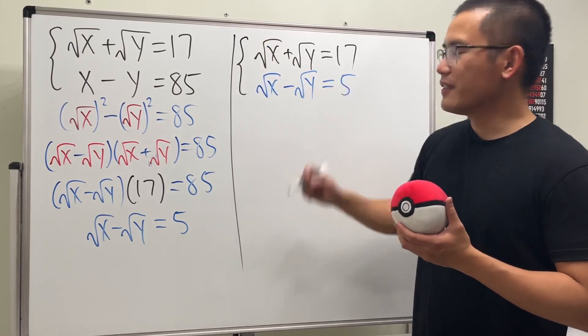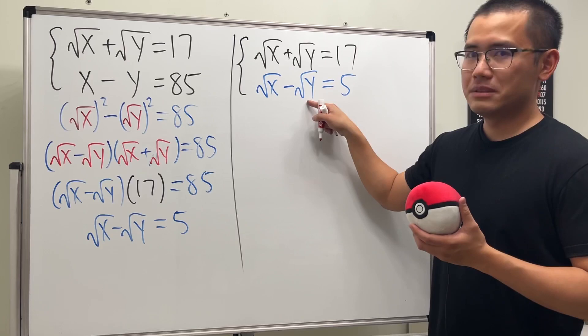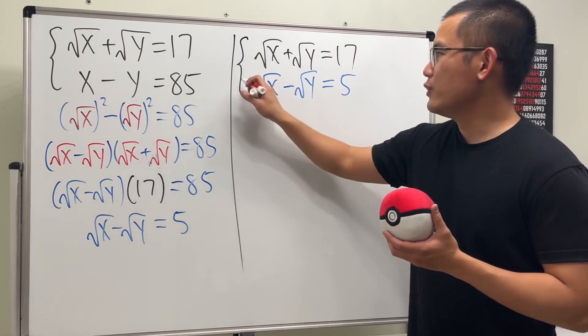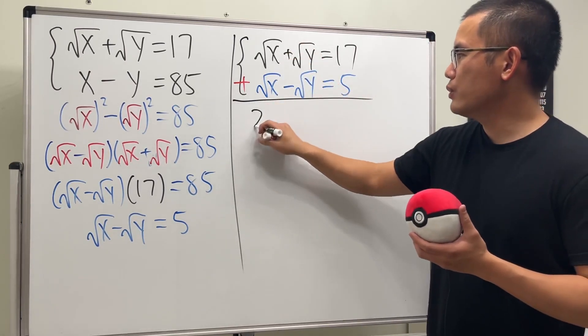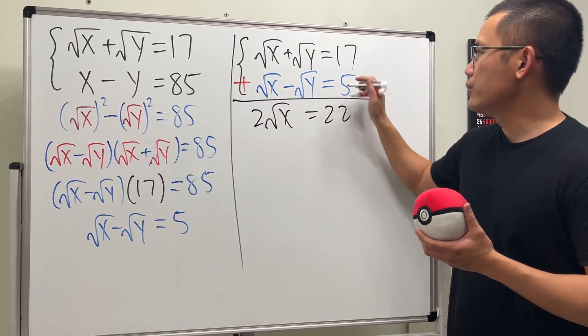We have this and that being the same but opposite sign. So if we add them up, we will get two square root of x being equal to this, and that will just be 22, and of course they cancel.